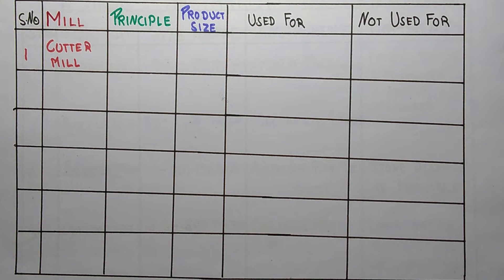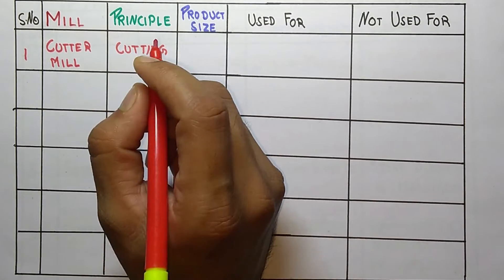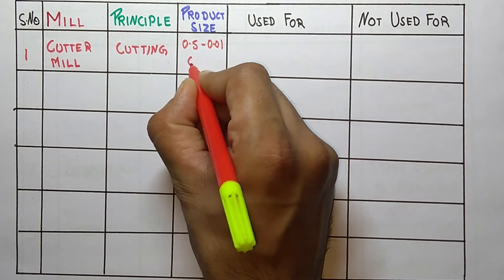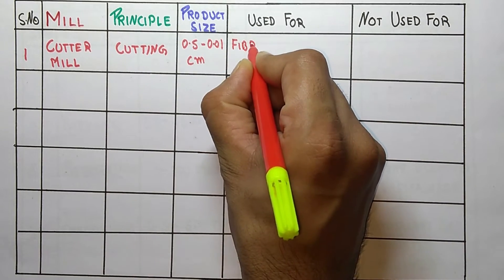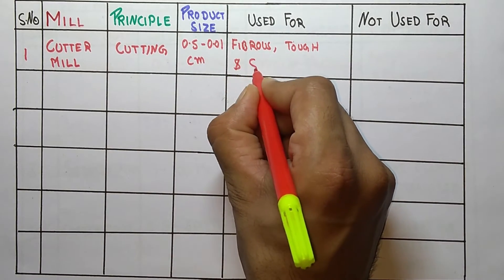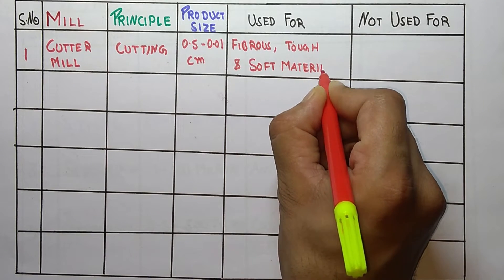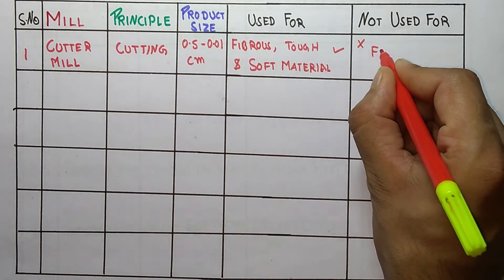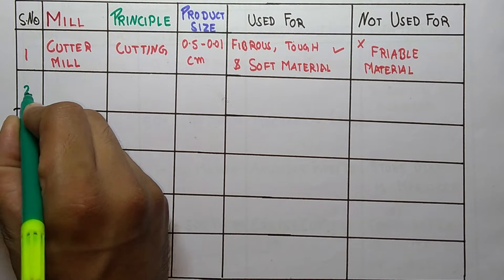The principle of cutter mill is, as its name indicates, cutting. The product size is 0.5 to 0.01 cm. It is used for fibrous, tough, and soft materials. It is not used for friable materials like hard materials.